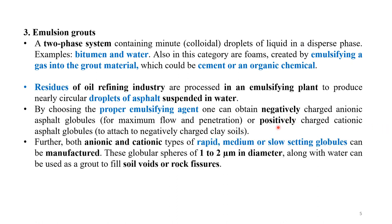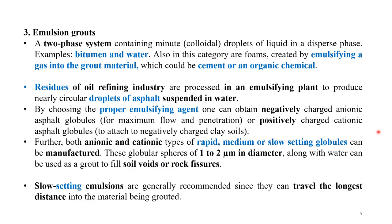Both negatively charged (anionic) and positively charged (cationic) globules can be produced. Cationic globules attach to negatively charged clay soils. These globules are further classified as rapid, medium, or slow setting. The globule spheres are 1 to 2 microns in diameter and along with water can be used as grout to fill soil pores or rock features. Slow setting emulsions are generally recommended since they can travel the longest distance into the material being grouted, allowing penetration to greater depth.